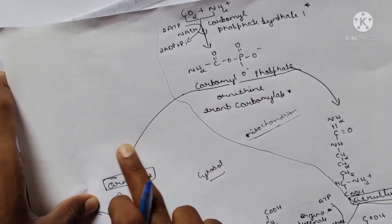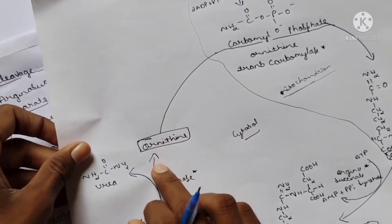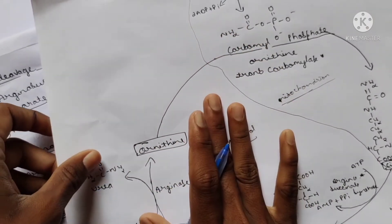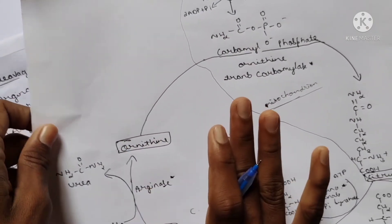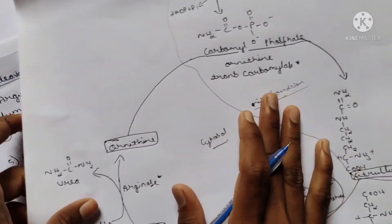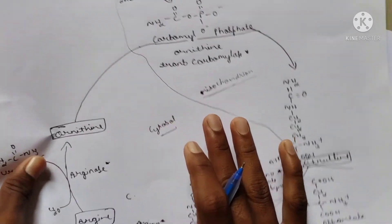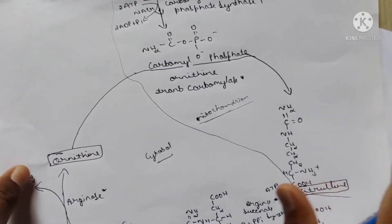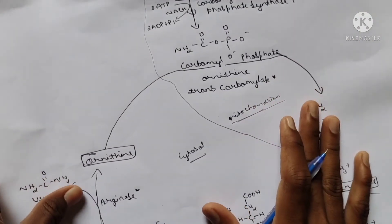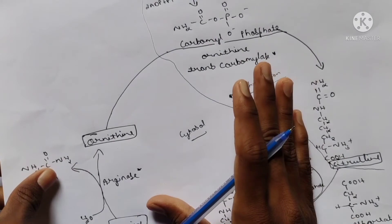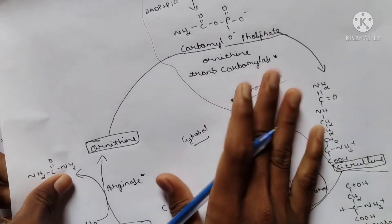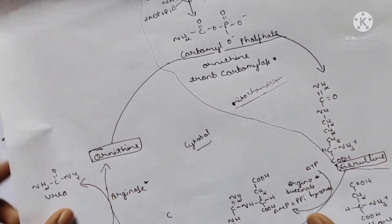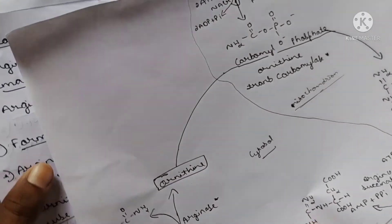Ornithine gets reused in the urea cycle while urea is excreted in the form of urine via the kidneys. Notes for this topic will be added in the description - these are preferable notes and reading them will help you score maximum marks.